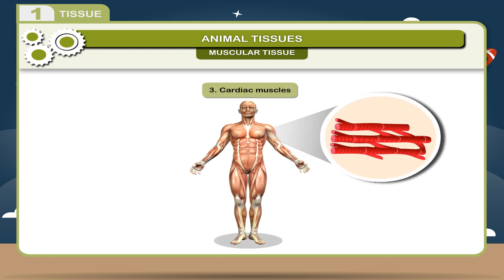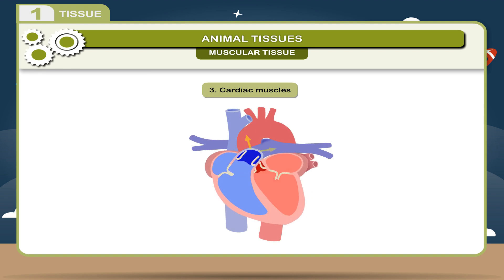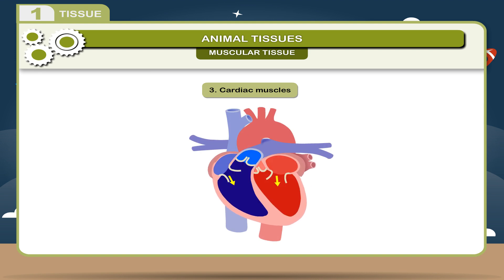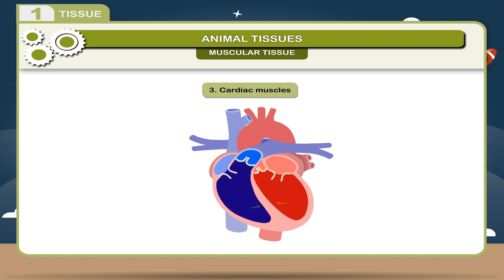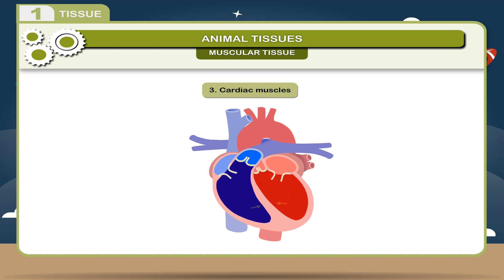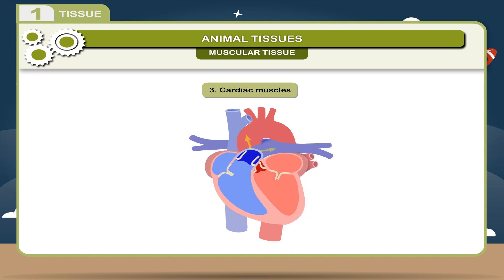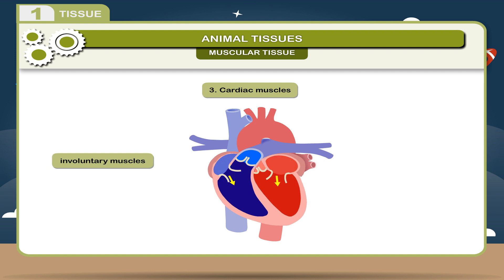3. Cardiac Muscles: These are composed of branched cells that have striations on them. They are present only in the heart. They help in pumping blood to the different parts of the body, and are responsible for the expansion and contraction of the heart. They are involuntary muscles.